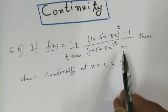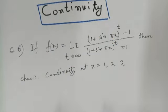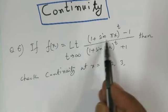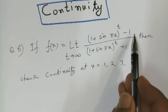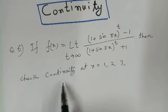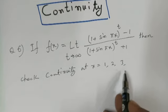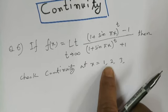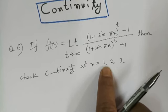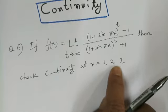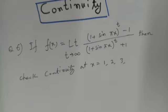This is a very important question for joint entrance exam. If f equals to the limit of (1 + sin(πx))^t − 1 upon (1 + sin(πx))^t + 1, then check the continuity at x equals to 1, 2, 3. I will solve the check at x equal to 1, and please you check at x equal to 2 and 3 at home.